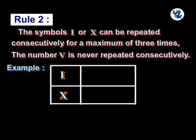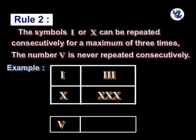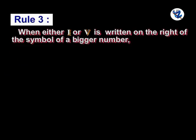Rule 2: The symbols I or X can be repeated consecutively for a maximum of 3 times. The numeral V is never repeated consecutively.